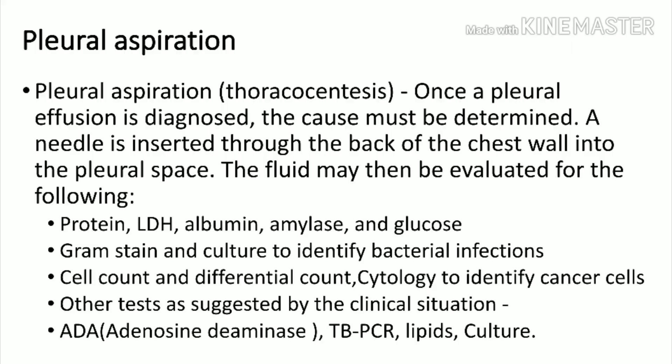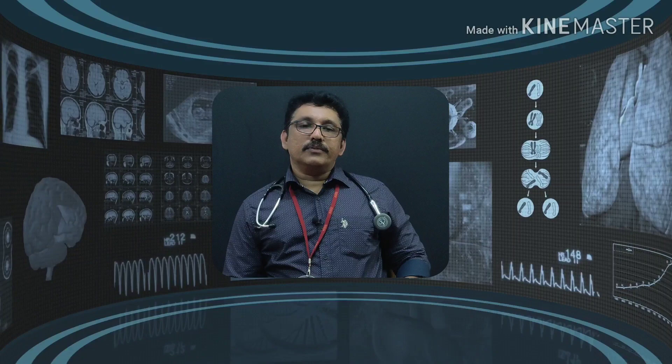In cardiac failure or liver failure, aspiration is not necessary. In the pleural fluid, you should test protein, LDH, albumin, amylase, and glucose. If infection is suspected, send for cell count, cell type, cytology for malignancy, Gram stain, and culture. ADA is a very important investigation for tuberculosis; TB PCR and fungal/bacterial cultures can also be done.